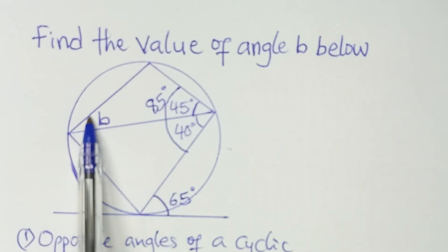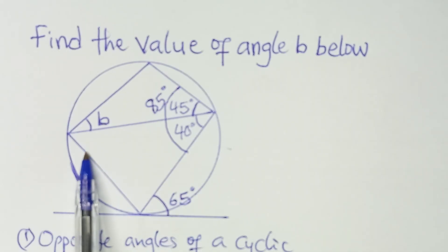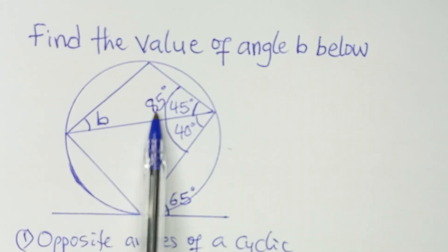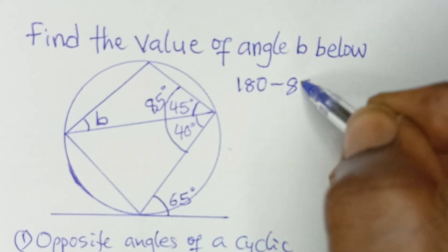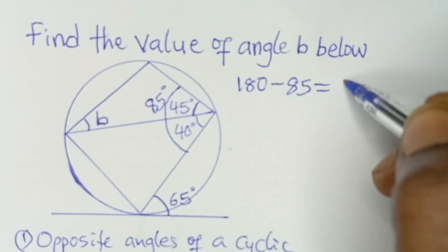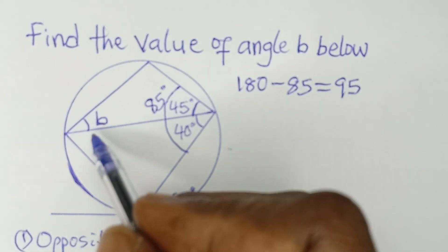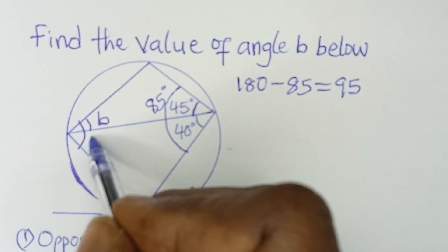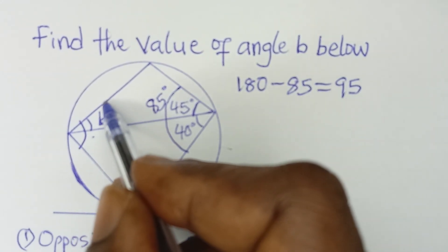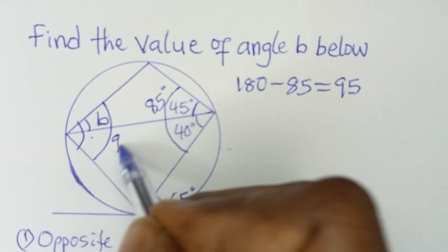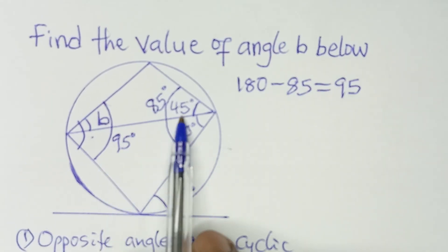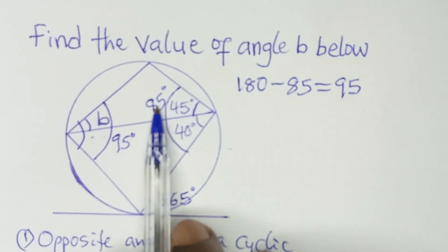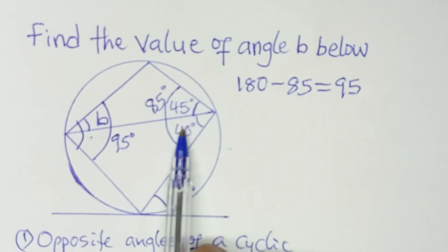Supplementary means they add up to give 180. So 85 plus the total angle here should give us 180. To get this remaining part, I am going to say 180 minus 85, which equals 95. So the total of this angle here is 95 degrees. The opposite angles add up to 180: 95 plus 85 gives us 180 degrees.